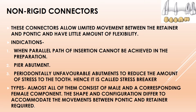Another indication is a pier abutment — an abutment with edentulous space present on either side of it. In this case, non-rigid connectors are used. Additionally, for periodontally unfavorable abutments, non-rigid connectors are used to reduce the amount of stress on the tooth. Because of this stress-reducing function, non-rigid connectors are also called stress breakers.